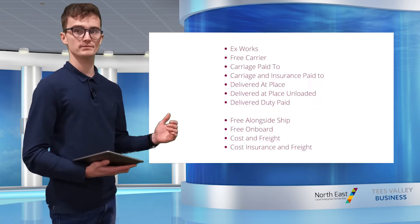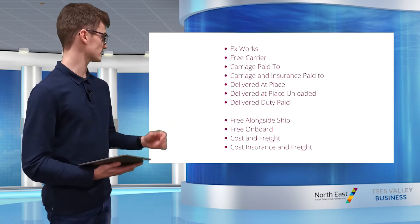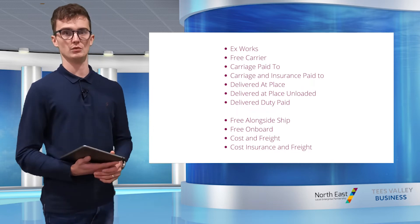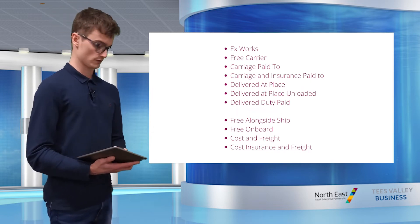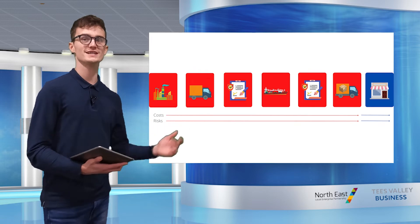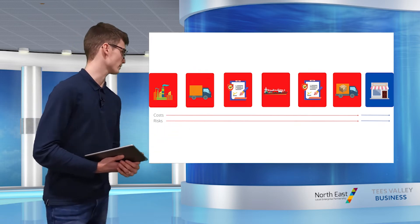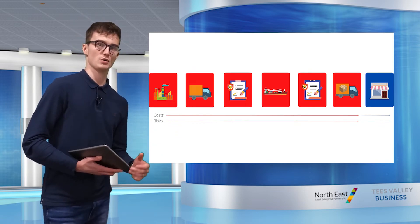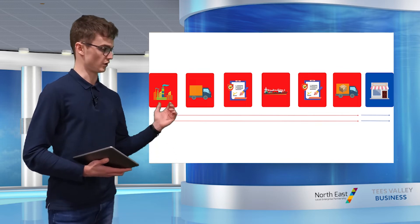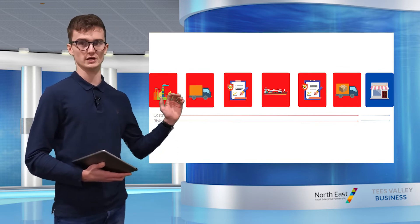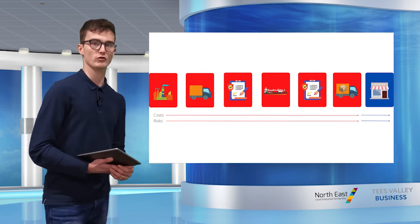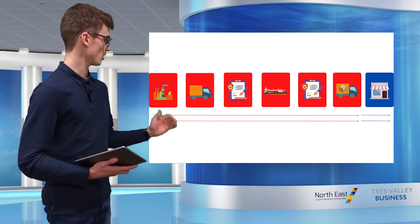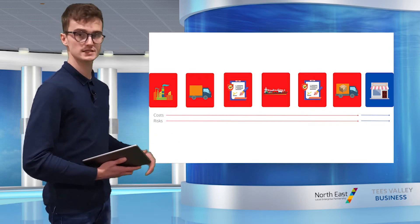At the other end of the scale we have Delivered Duty Paid — DDP — which you can instantly see compares and differs to Ex Works. Whereas Ex Works had the majority of the journey in blue, here we are almost entirely red. DDP puts the greatest onus on the seller.